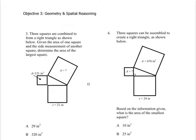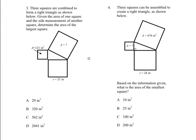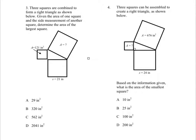Okay, here we have problem three and problem four. Let's take them one at a time. Problem three says three squares are combined to form a right triangle as shown below. Given the area of one square and the side measurement of another square, determine the area of the largest square. Notice what it has: A is 121 inches squared, and then it has S which is another leg says 21 inches, and then A. That's going to be a good one there, so go ahead and pause it, work three.